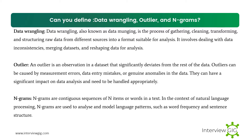Can you define data wrangling and outlier? Data wrangling, also known as data munging, is a process of gathering, cleaning, transforming, and structuring raw data from different sources into a format suitable for analysis. It involves dealing with data inconsistencies, merging datasets, and reshaping data. An outlier is an observation in a dataset that significantly deviates from the rest of the data. Outliers can be caused by measurement errors, data entry mistakes, or genuine anomalies, and can significantly impact data analysis.